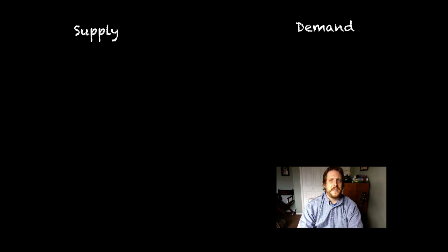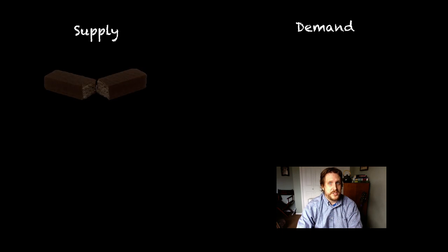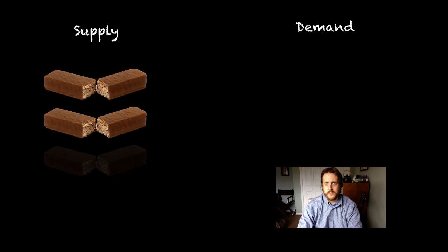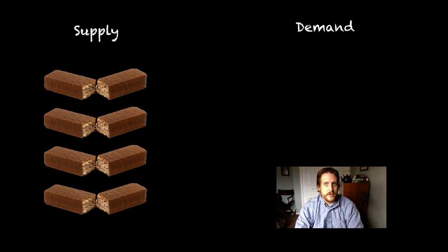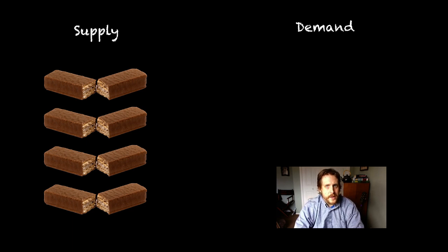Today we're going to take a look at two concepts: supply and demand, and how that really changes the price of certain goods. Let's start by pretending I am a candy store owner, and I have purchased from the producer — from Hershey's, let's say — four candy bars to sell in my candy store, and I sell those for $5 a pop.